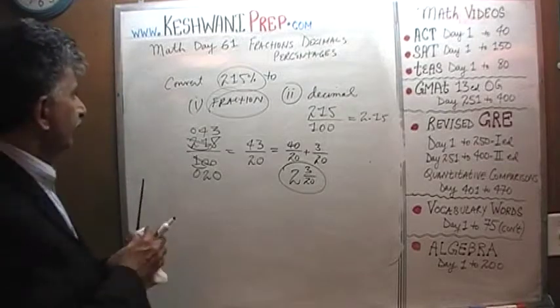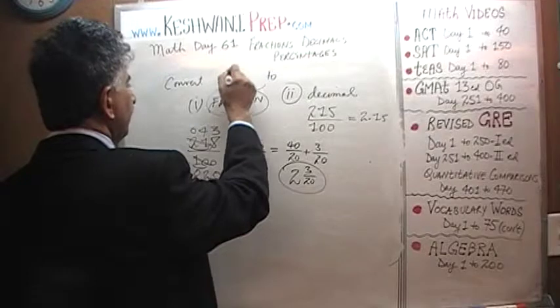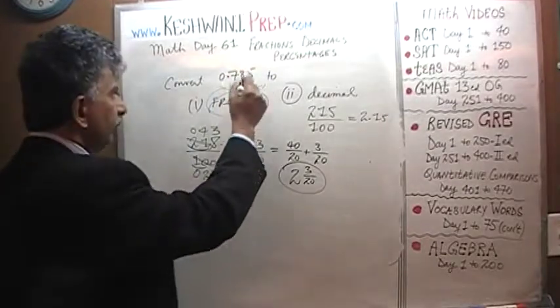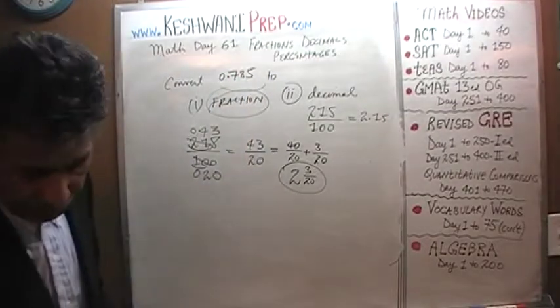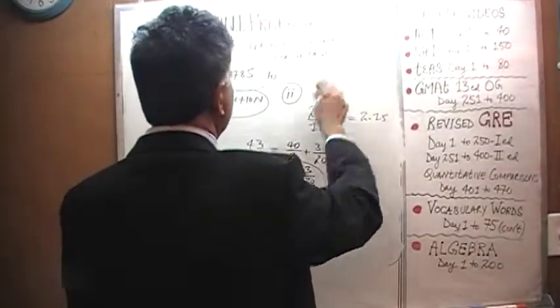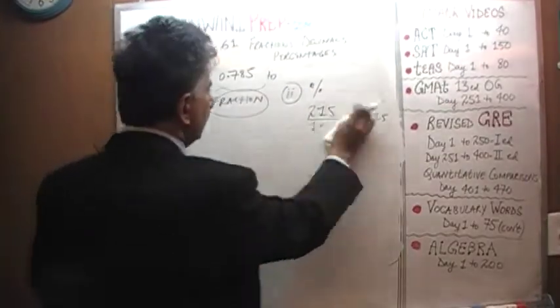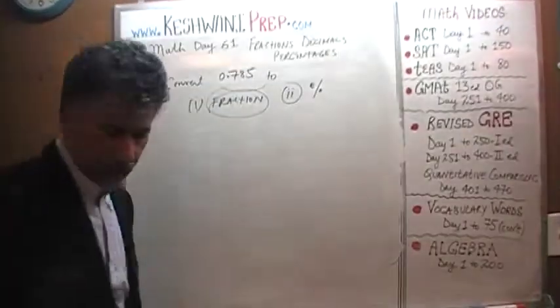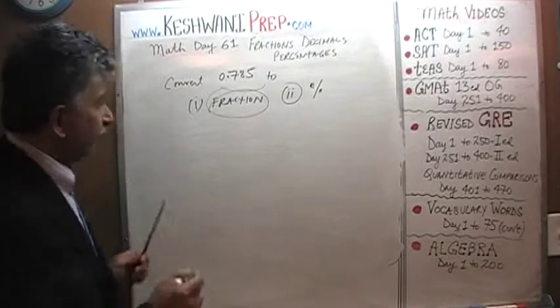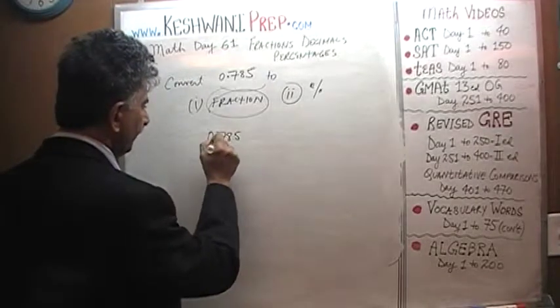The next one is asking us to convert 0.785 into percent and fraction. Let's do it then. First thing first, let's do the fraction first. 0.785 is what we have.